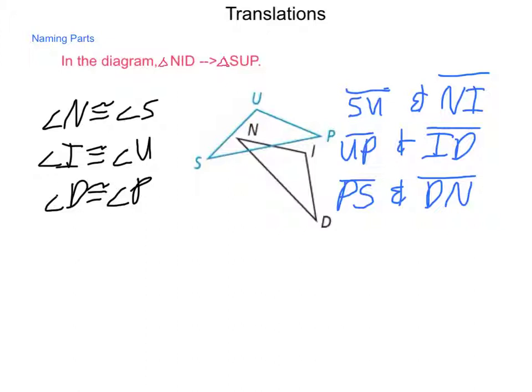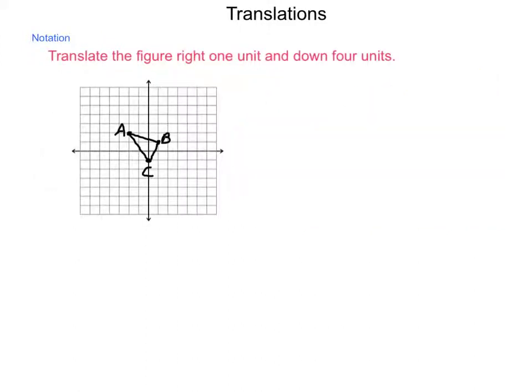So once we get into being able to identify the corresponding parts, what else can be done in the way of translations? Well, just like with other parts of geometry, each of these has their own notation and way of writing. So we're going to translate the figure that is shown, triangle ABC, one unit right and four units down. And there's a couple ways of writing this. The first is going to be that we're going to take our values as written coordinates. So we have (x,y), and what we're going to do is we're going to say x, right is positive, so we'll go x+1, and down is negative, so we'll go y-4. This is one way of writing this transformation.